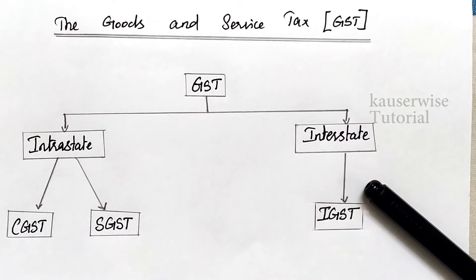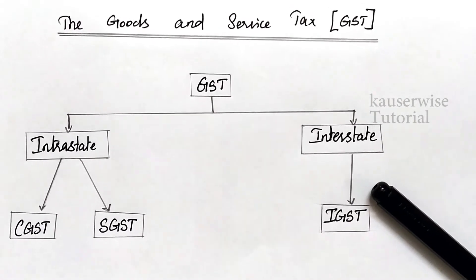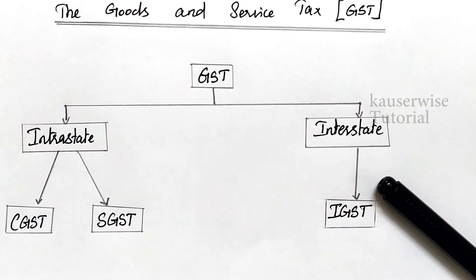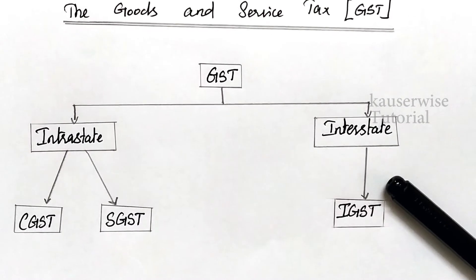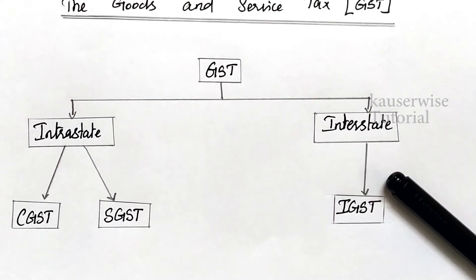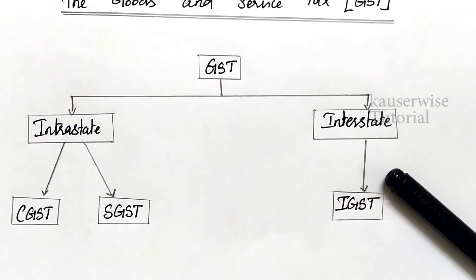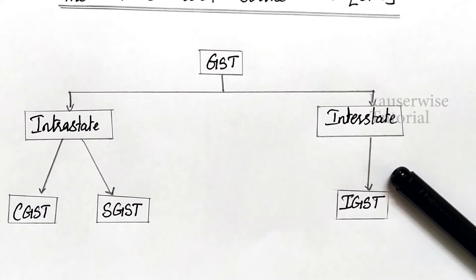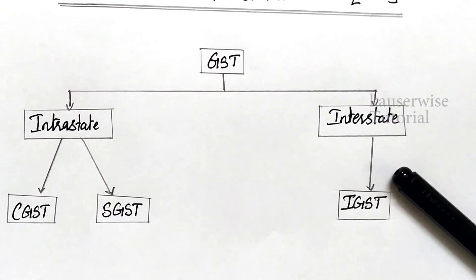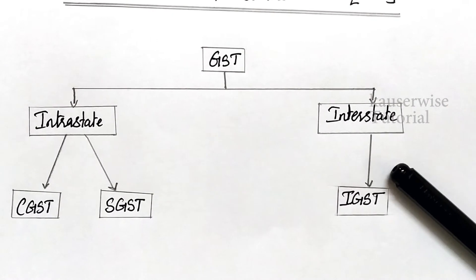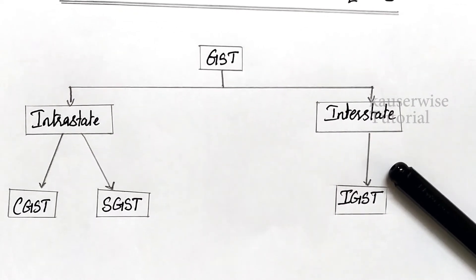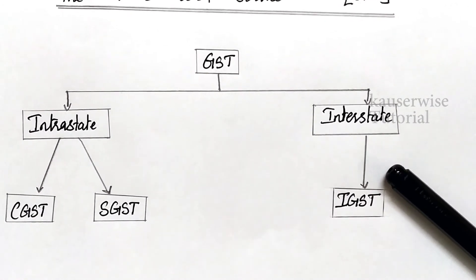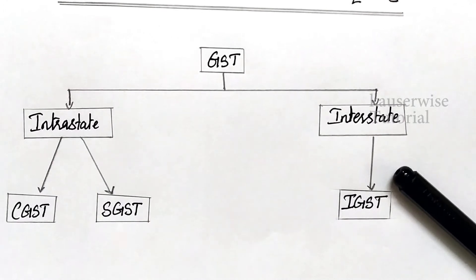In interstate transactions, you need not pay CGST or SGST — you pay only IGST. The entire 10% is payable to the Government of India, which collects the total amount from the buyer. This tax is then divided between the union and the states as provided by parliament, on the recommendation of the GST Council. You do not split the amount — the total is paid to the central government, which later shares it with the state government.